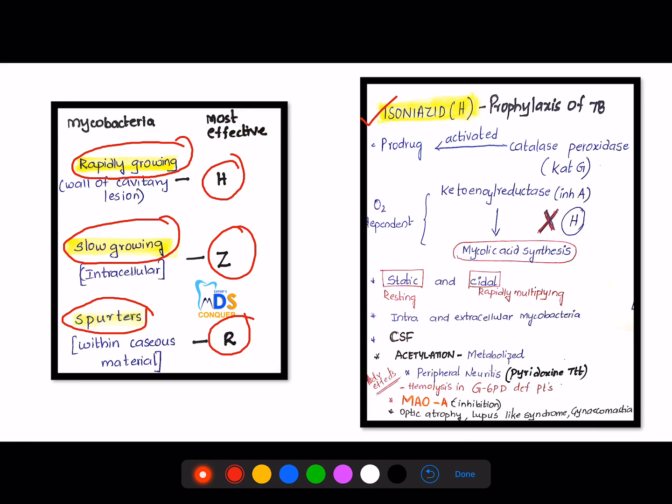Then first coming to the drug isoniazid. This is a very important drug because it is the only and the most drug which is used in the prophylaxis of tuberculosis. And here, this is a prodrug which is activated by catalase peroxidase which is denoted by KatG. The mechanism of action is, this isoniazid will inhibit this keto-enoyl reductase into mycolic acid synthesis. And this mycolic acid is very important cell wall component of mycobacterium. And this entire process is oxygen-dependent.